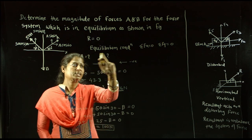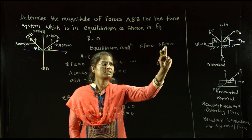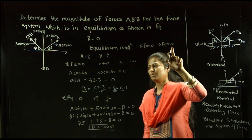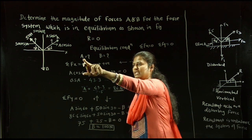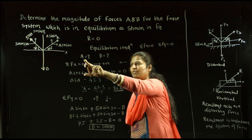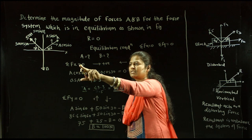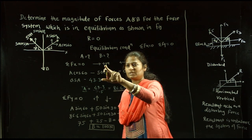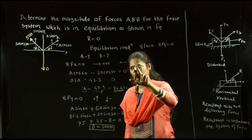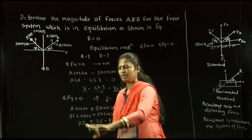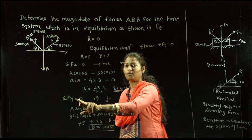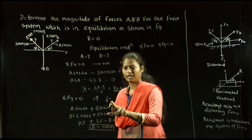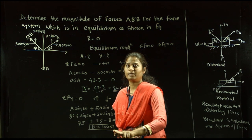By using the equilibrium conditions ΣFx = 0 and ΣFy = 0, we calculated the unknown forces. Using the algebraic sum of horizontal forces equal to 0 (rightward positive, leftward negative), we get A = 86.6 Newton. Using the algebraic sum of vertical forces equal to 0 (upward positive, downward negative), we get B = 100 Newton.